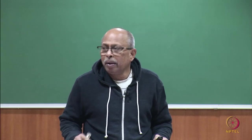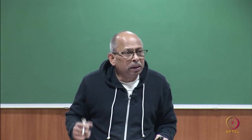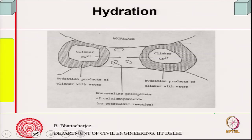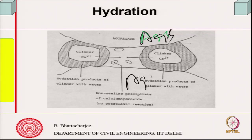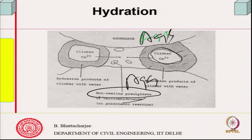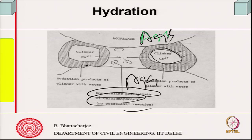One issue of sustainability is that the structure should be, as much as possible, maintenance-free. In the context of the aggregate–cement interface: cement clinker is there with hydration product, and the space between aggregate particles will be filled by a non-sealing precipitate of calcium hydroxide if it is only ordinary Portland cement clinker. Calcium hydroxide is a non-sealing precipitate — it does not seal but fills that space.